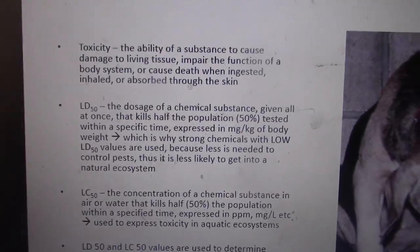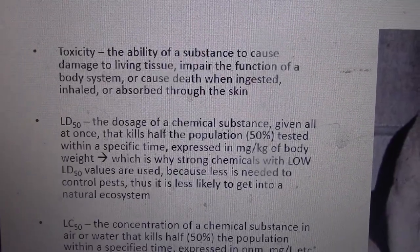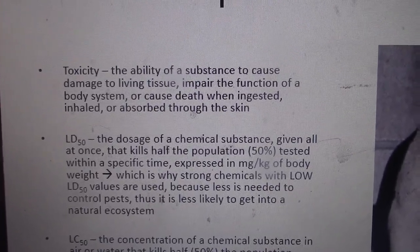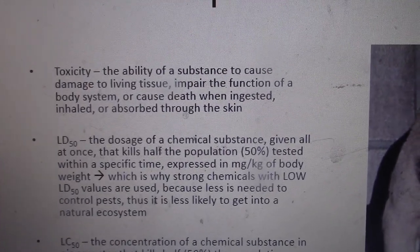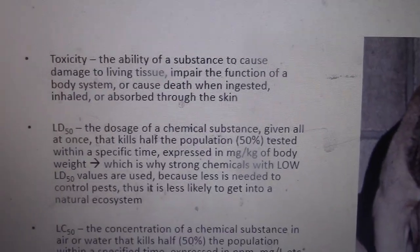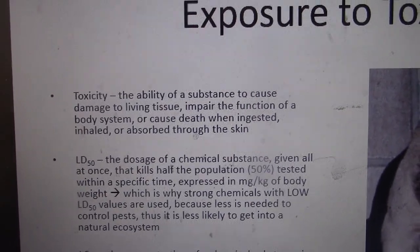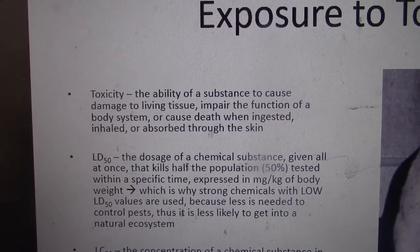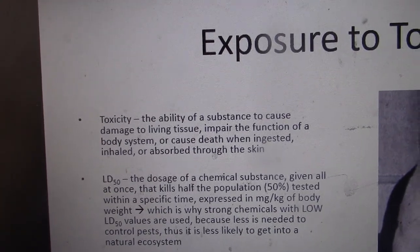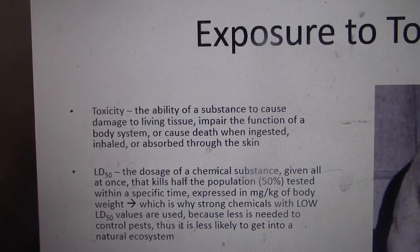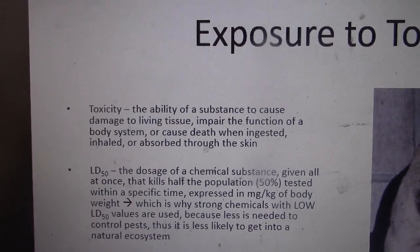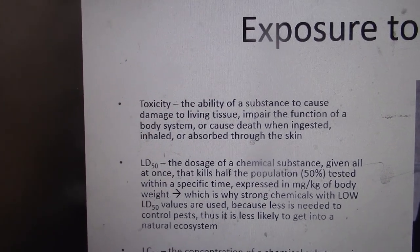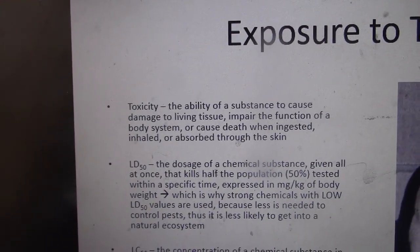When we make pesticides, herbicides, and other pollutants, we do LD50 and LC50 testing to understand how they'll act in an environment. LD50 is the dosage of a chemical substance given all at once that kills half the test population within a specific time, expressed in milligrams per kilogram body weight. We generally want strong chemicals with low LD50 values because less is needed to control pests. Toxicity at lower concentrations means less chemical gets into the environment, which is also more economical.